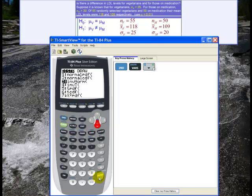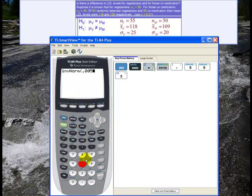So I go to second distribution, and then inverse normal, or inv norm, which is number three, and then 0.005, and the parentheses. And that will give me the z critical value, which is rounded to two decimal places. That's about negative 2.58.